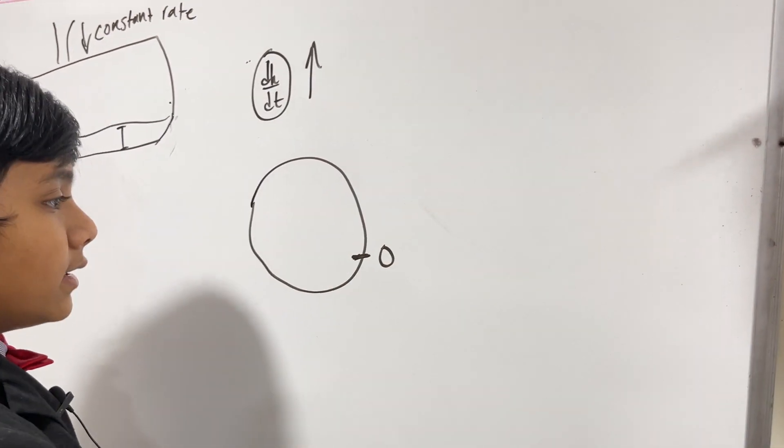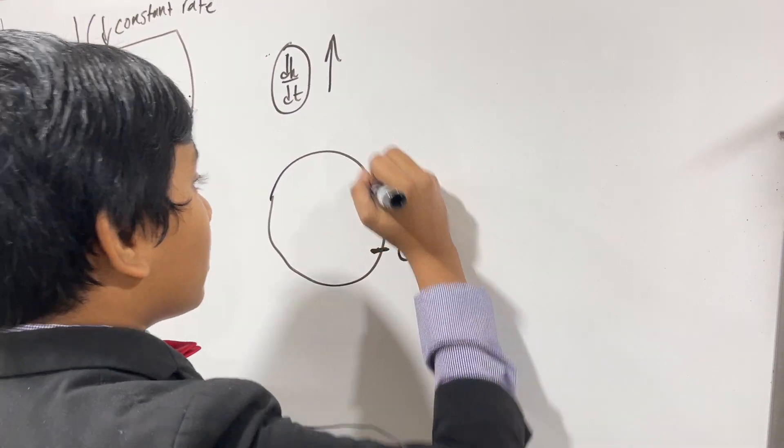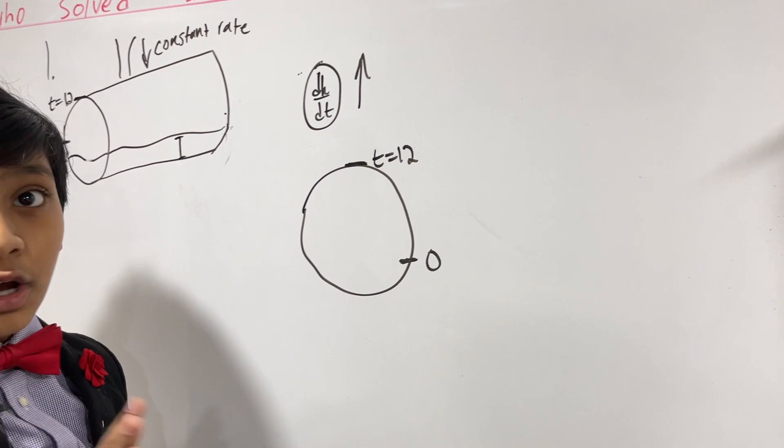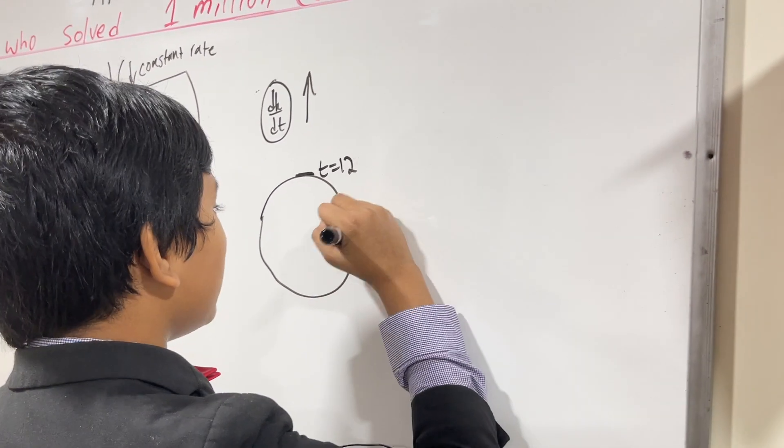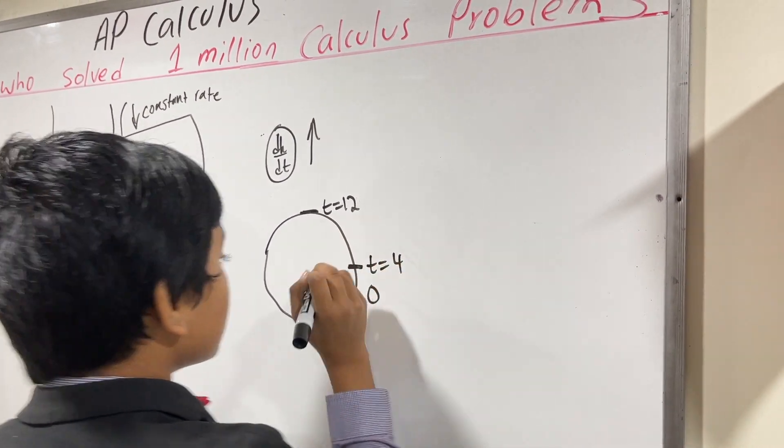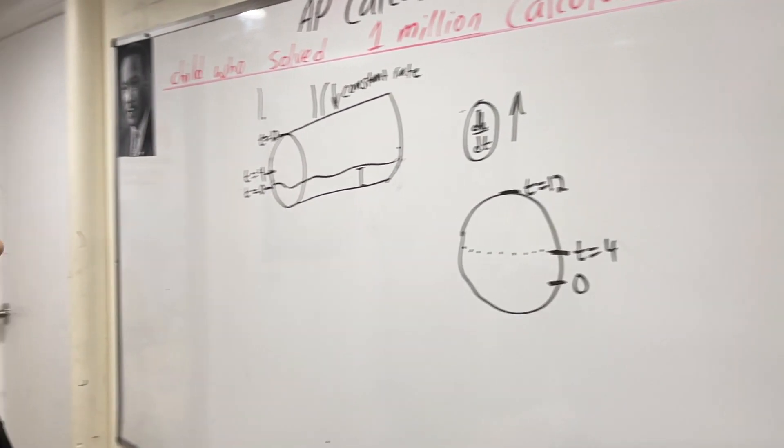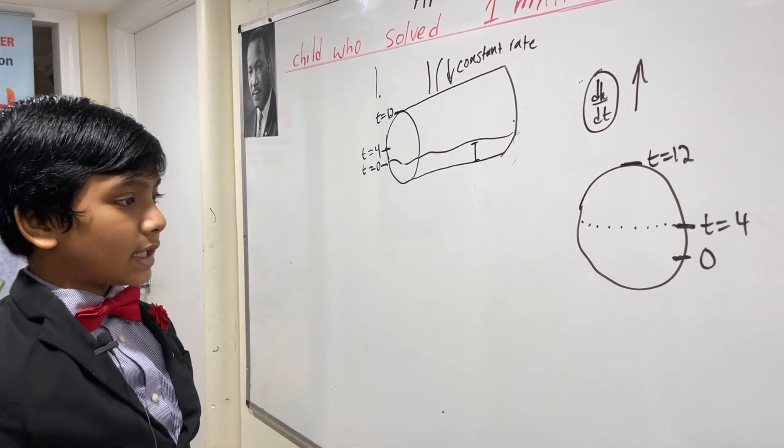We already know this is at t equals zero, and this is at t equals twelve. But the crucial thing to note is that t equals four is right in the middle of the circle, straight through the middle. So what does that mean?